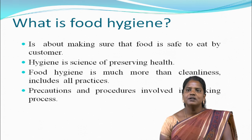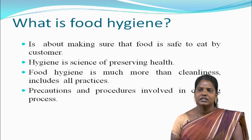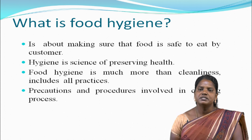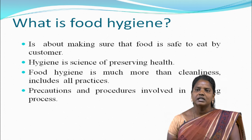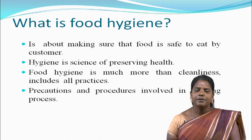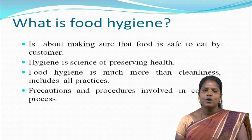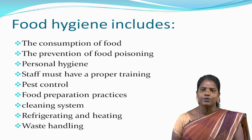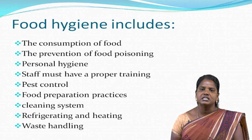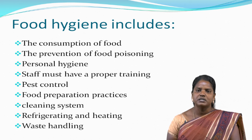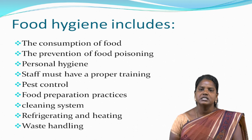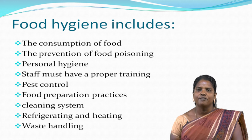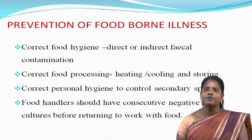Food hygiene is about making sure that food is safe to eat by the customer. Hygiene is the science of preserving health, and food hygiene is much more than cleanliness — it includes all practices, precautions, and procedures involved in cooking processes. Food hygiene includes the prevention of food poisoning, personal hygiene, proper staff training, pest control, food preparation practices, cleaning systems, refrigerating, heating, and waste handling.